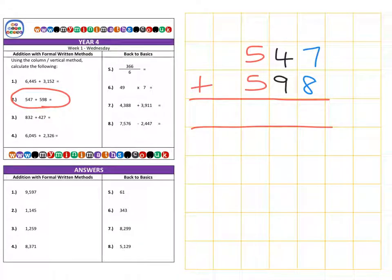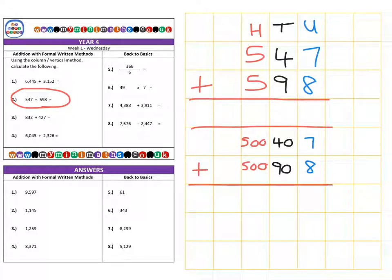And so back to the original written question. First of all in the units column we have 7 add 8. Then in the tens column we have 40 add 90. And finally in the hundreds column we have 500 added to 500. I'm going to add those together. So let's have a little look at what we have.